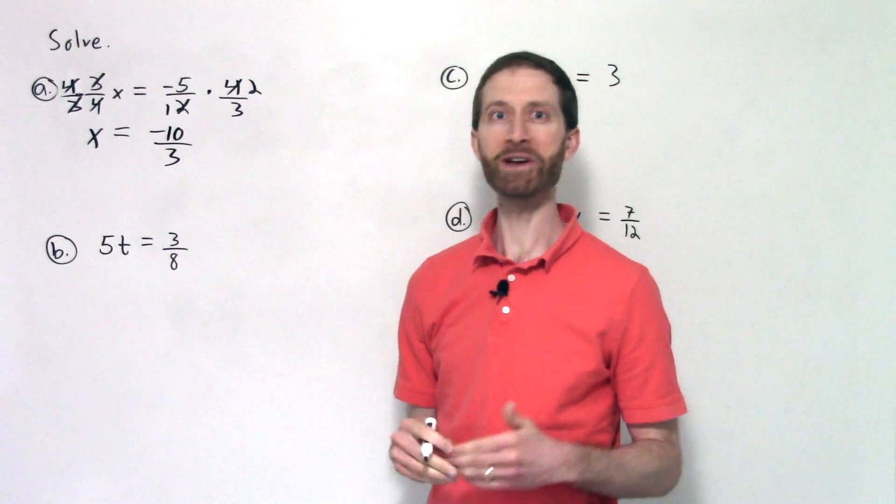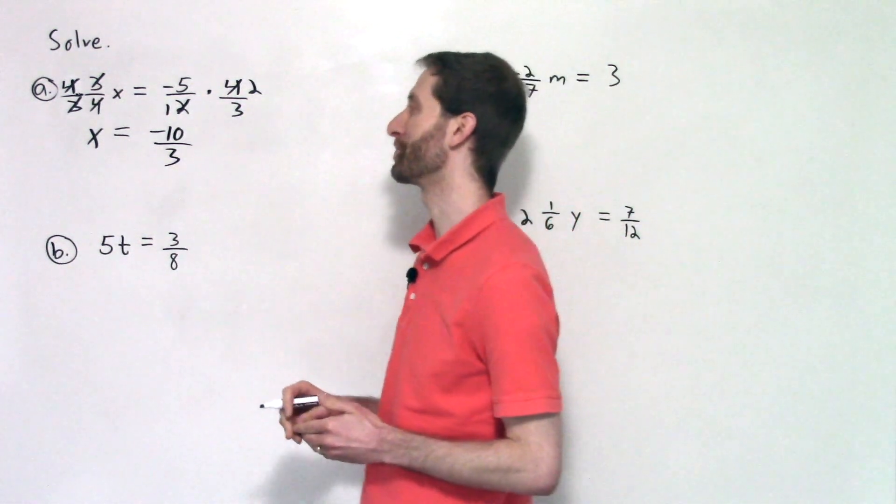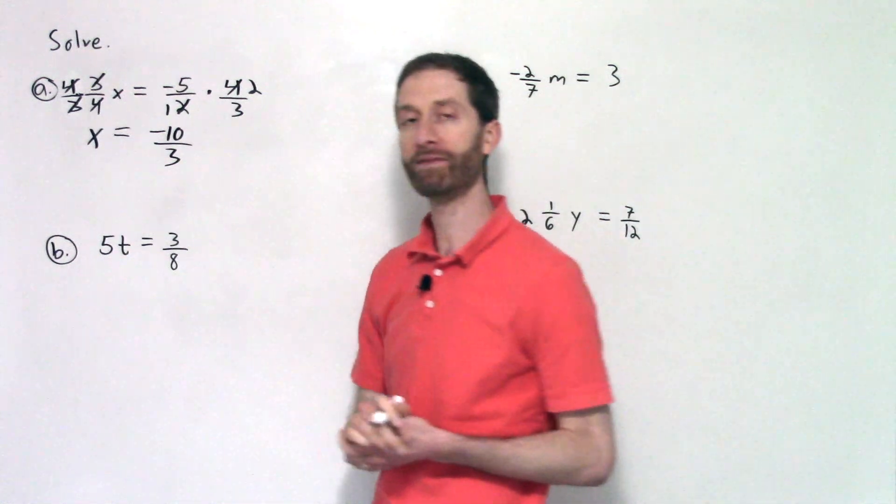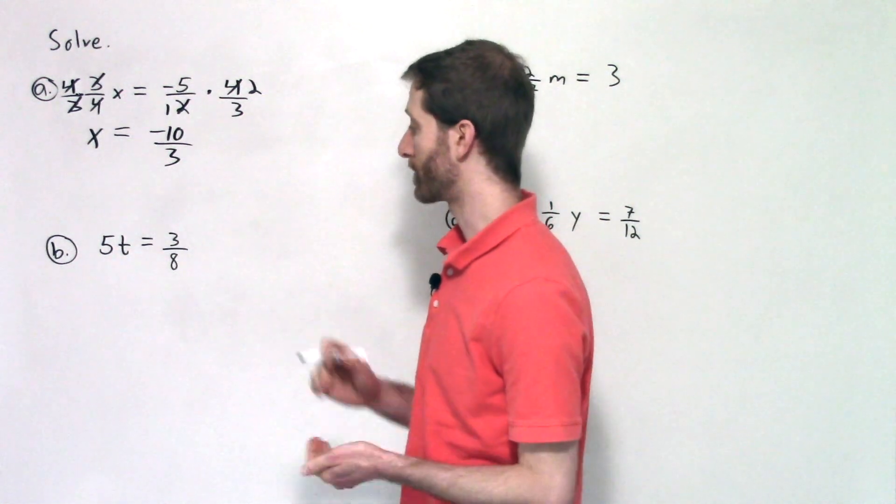And that's it. That's how we solve that equation. Very sweet. So we get x equals negative ten-thirds. Check out the second example. Five times t equals positive three-eighths.